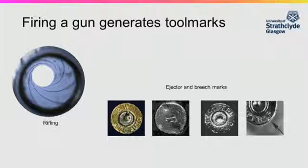These rifling marks are classified as impressed tool marks. These rifling marks can indicate a particular type or brand of firearm, but not that a specific firearm was used to fire the projectile. Within these grooves, scratches are formed during the firing action. These scratches are referred to as striations, so are a form of striated tool marks.